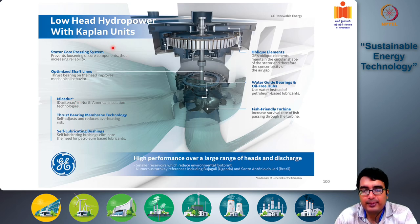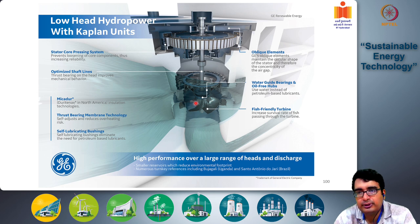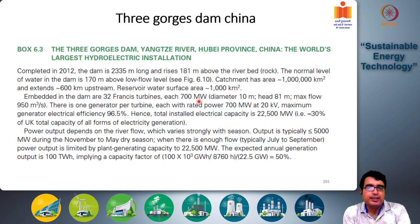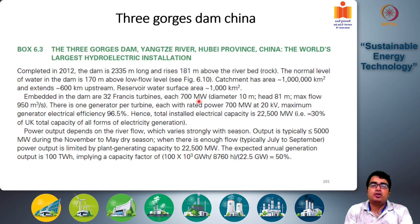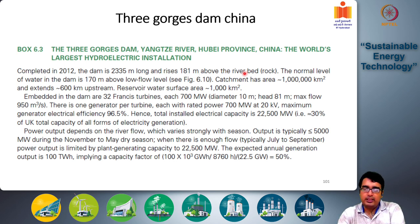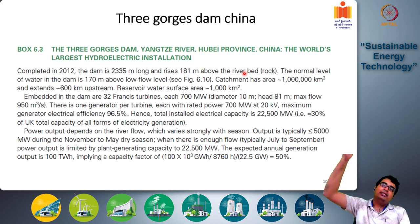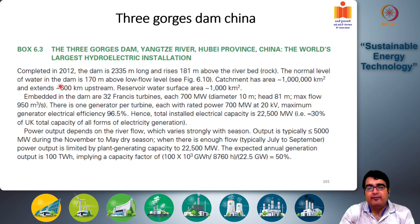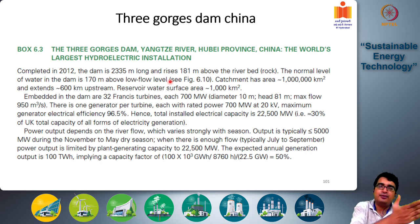This shows a low-head hydropower installation with Kaplan units, with the generator shaft, stator, and rotor visible. The first figure of the slide showed the Three Gorges Dam in China, which is currently the largest hydroelectric power plant in the world, completed in 2012. The dam is 2,335 meters long and rises 181 meters above the river bedrock. The normal water level is 170 meters above the low flow level, so the effective water column height is 170 meters.